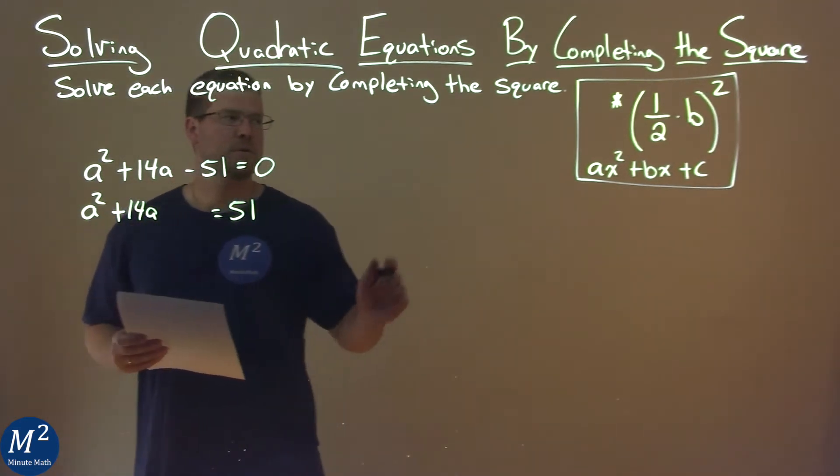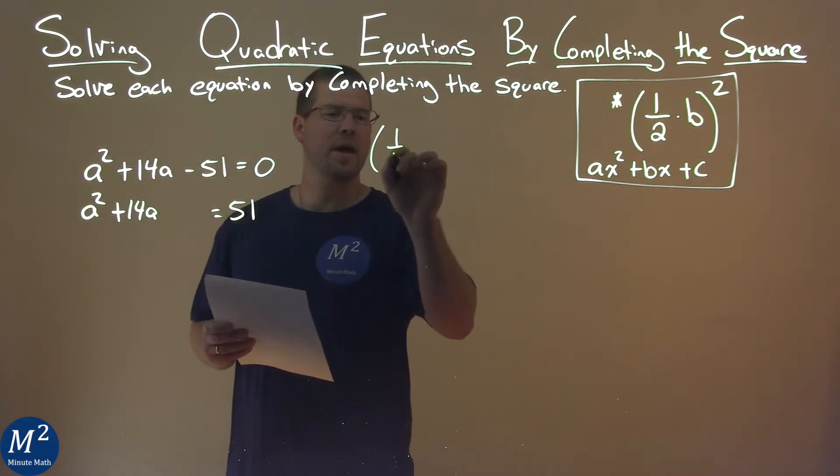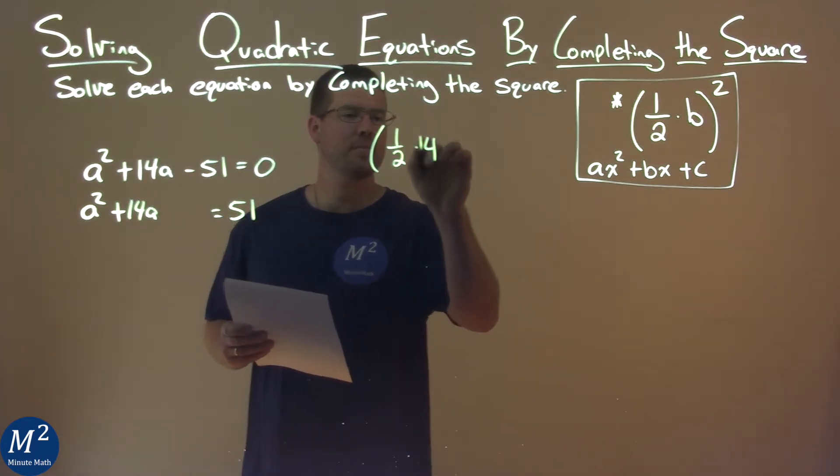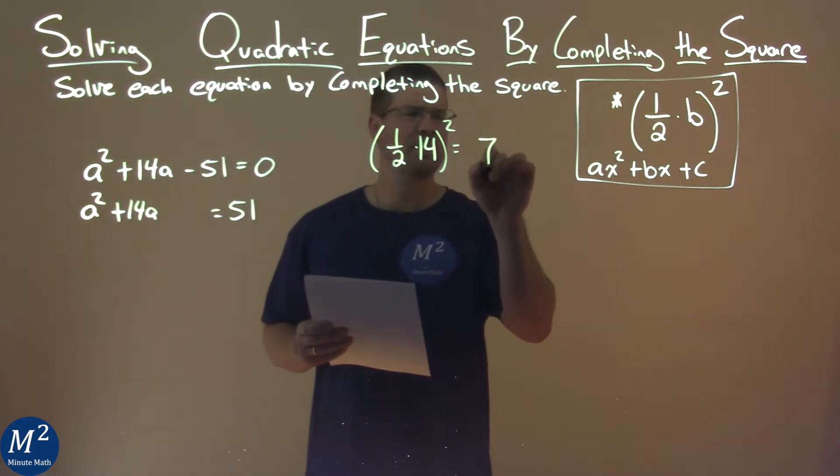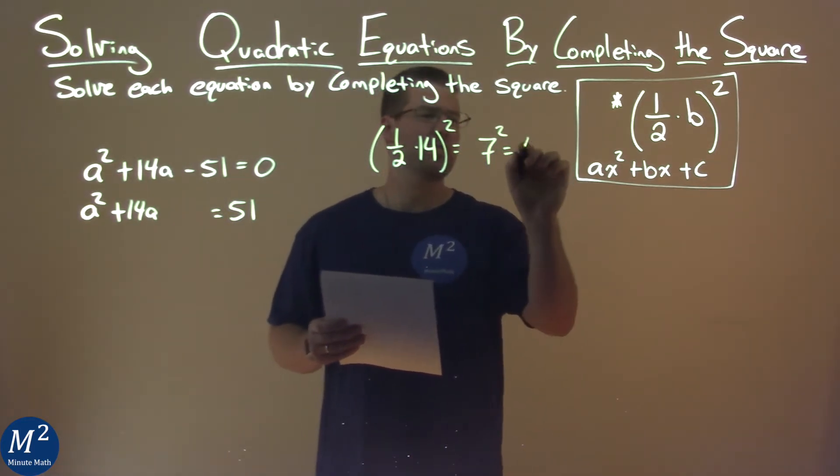Now I'm going to look at my b value, which is 14. I'm using my formula, 1 half times 14 is squared. And 1 half times 14 is 7, and 7 squared is 49.